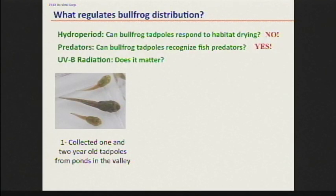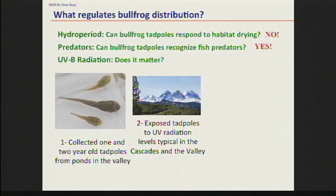What about UVB radiation? A lot of amphibian species are very susceptible to UV. Are bullfrogs? Is that why we don't find them at high elevations? We wanted to test this. We collected first-year tadpoles and second-year tadpoles, brought them into the lab, and exposed them to UVB radiation equivalents that you would see up at the high Cascades and also down here in the valley. We measured whether UVB mattered at all — or if they die when exposed to it.